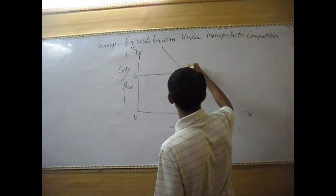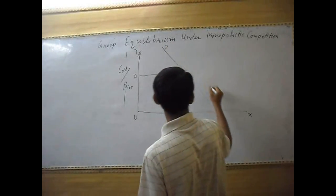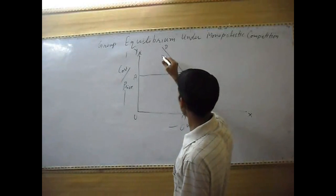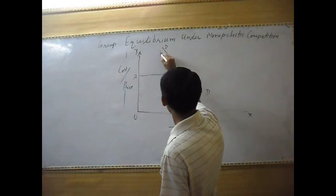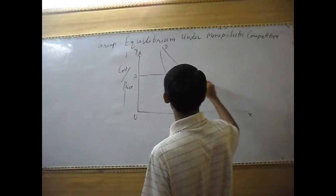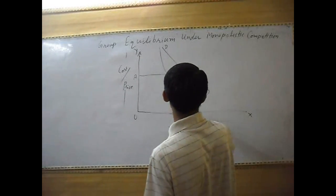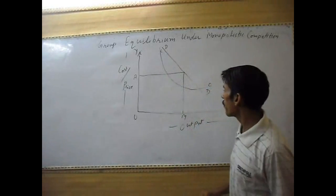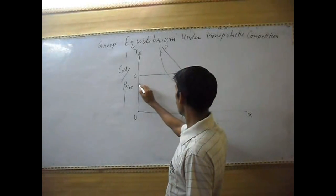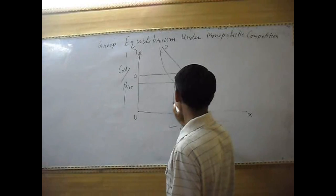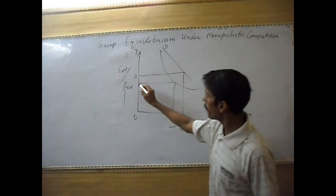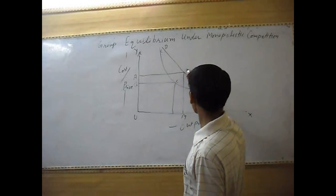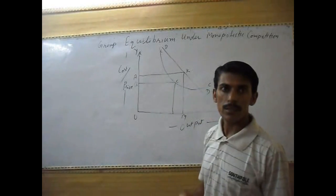This is the same demand of industry. Now at this point, the company is getting profit. This is a cost curve. The company is getting the profit. This is B C and K, this is a super profit.